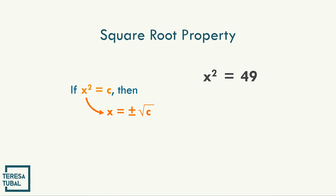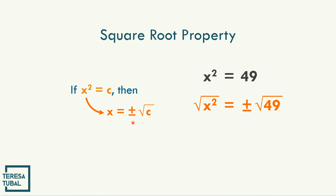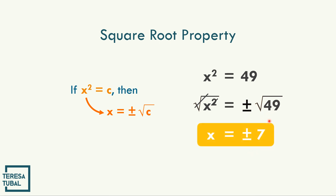In the given example, x squared is equal to 49. Let us solve for x. We write the square root on both sides, so the square root of x squared is equal to positive negative square root of 49. Cancel the 2 and the radical sign. So x is equal to positive negative 7. The solutions are 7 and negative 7.